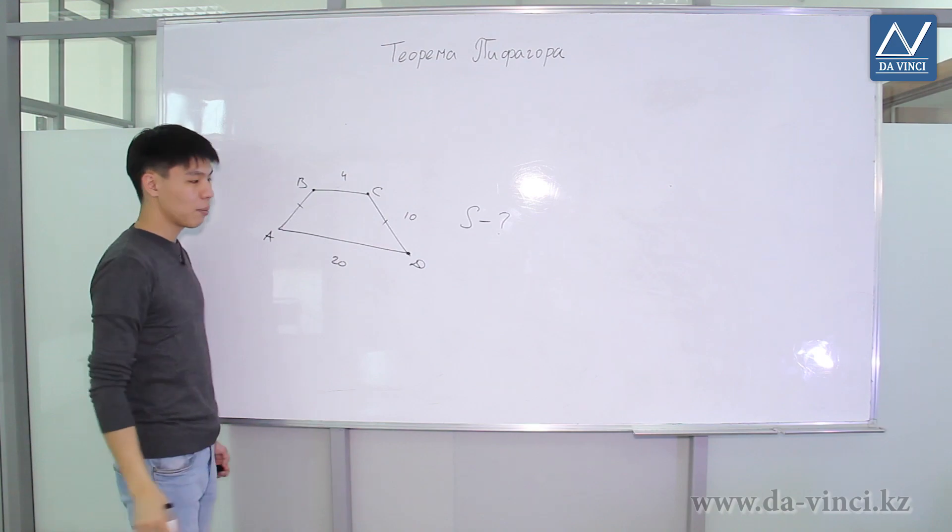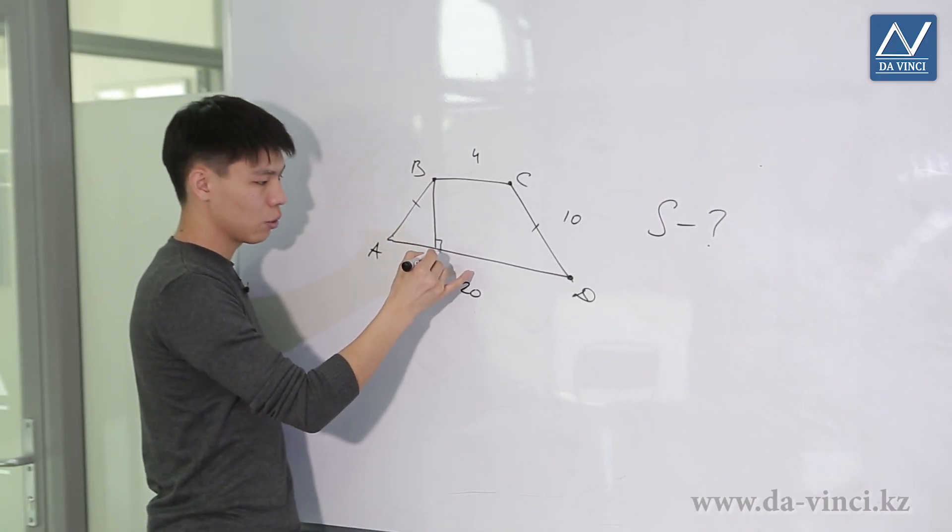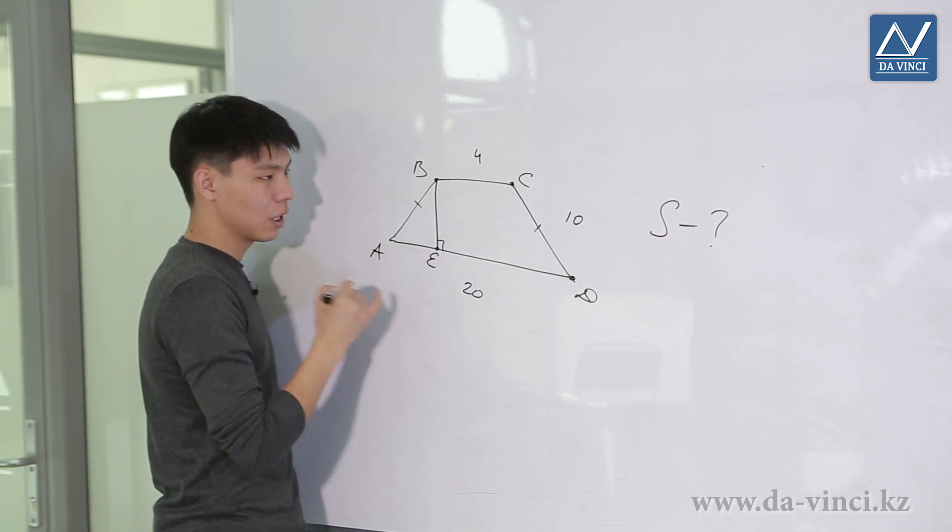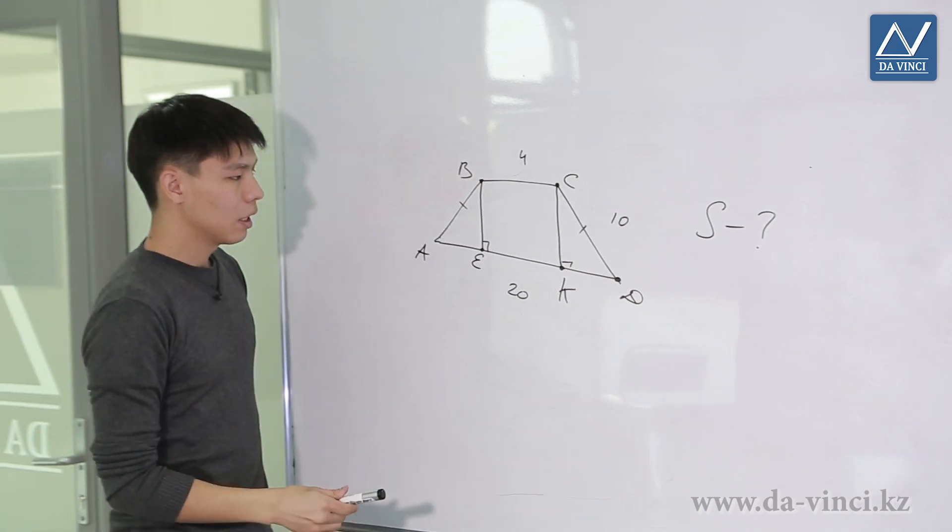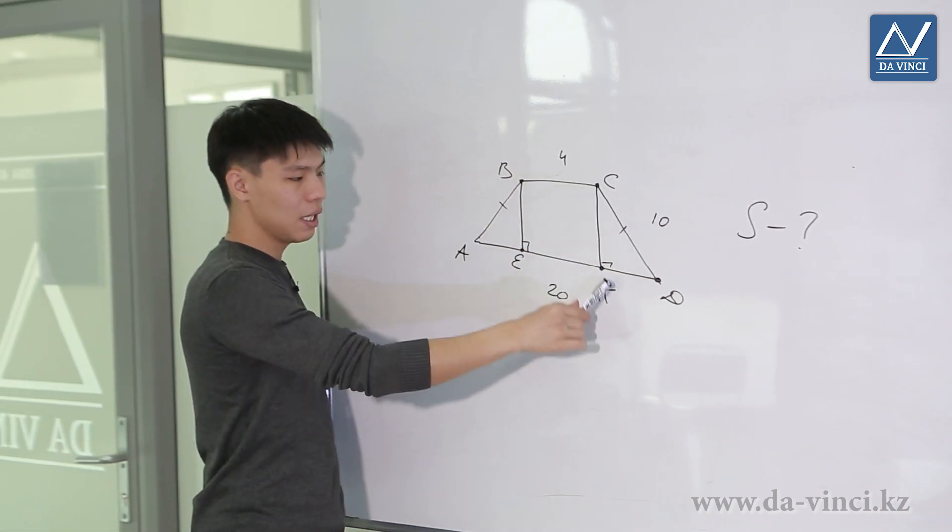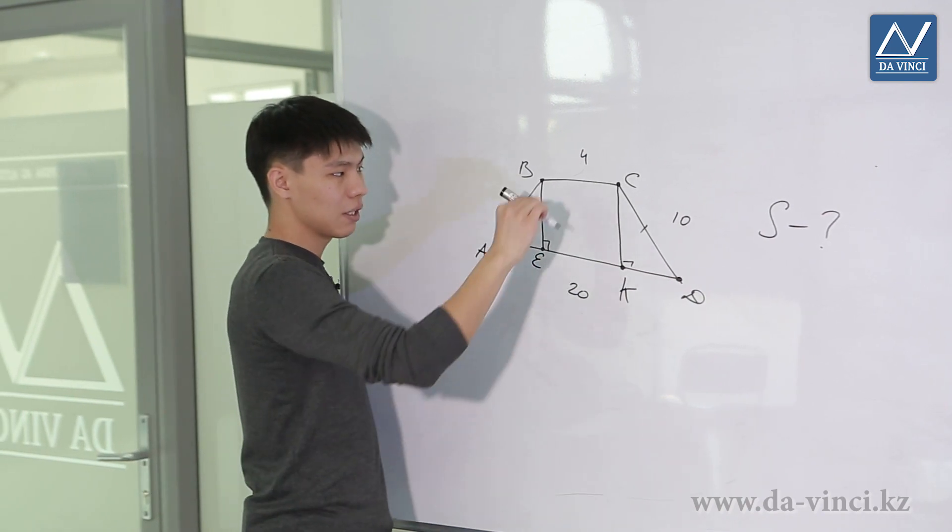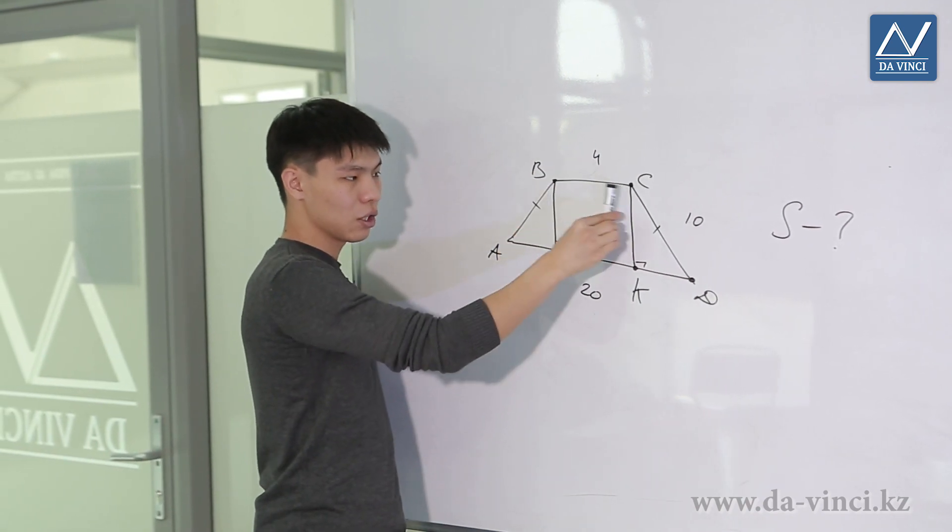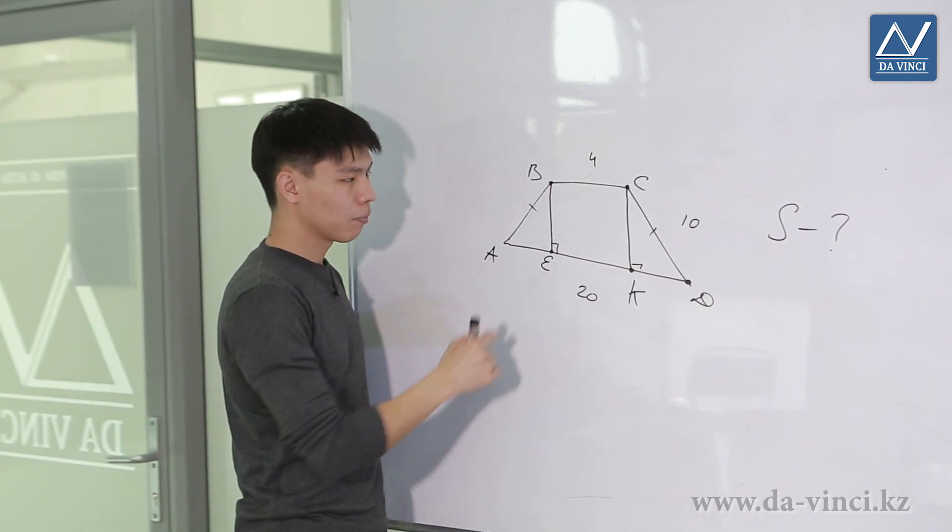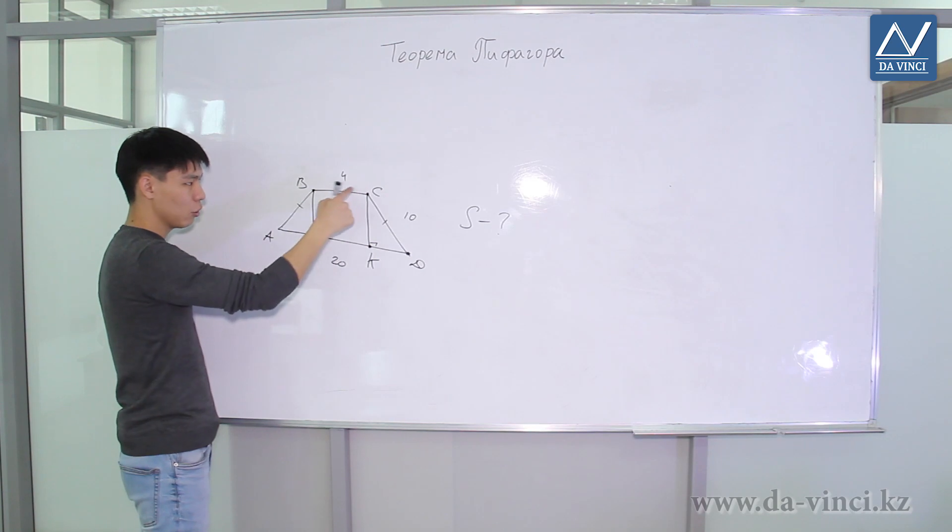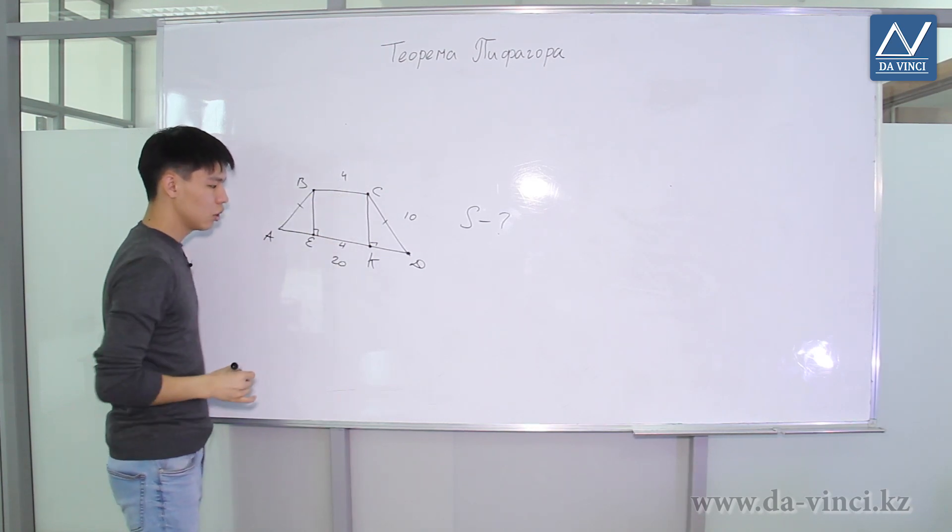We should drop the perpendicular from B and C to the side AD. That is, I dropped the perpendicular from point B. Let's mark it E. We do the same thing from the C. Let's name this perpendicular K. Let's consider the quadrangle BCKE. This quadrangle is a rectangle. These sides and these sides are parallel. And here is the angle of 90 degrees. So it's really a rectangle. If it is a rectangle, then opposite sides are equal. BC is 4, so EK will also be 4.